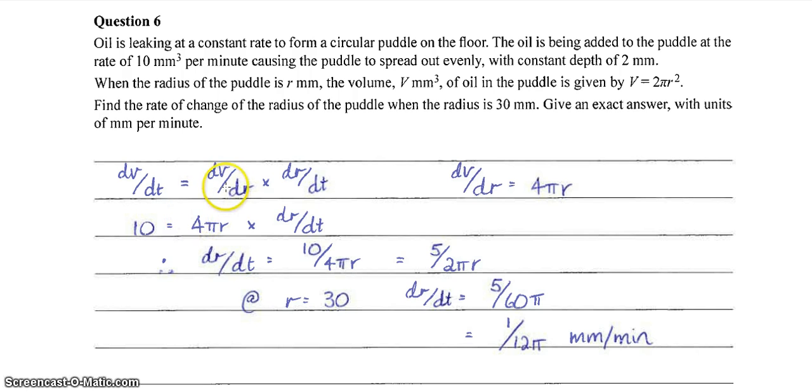When the radius is 30 millimeters. So solve for dr dt, you get 10 on 4 pi r, which is 5 on 2 pi r. Then if we sub 30 into that, we get 5 on 60 pi, which simplifies to 1 on 12 pi millimeters per minute. You have been asked for an exact answer with units of millimeters per minute. So make sure we write that out properly.